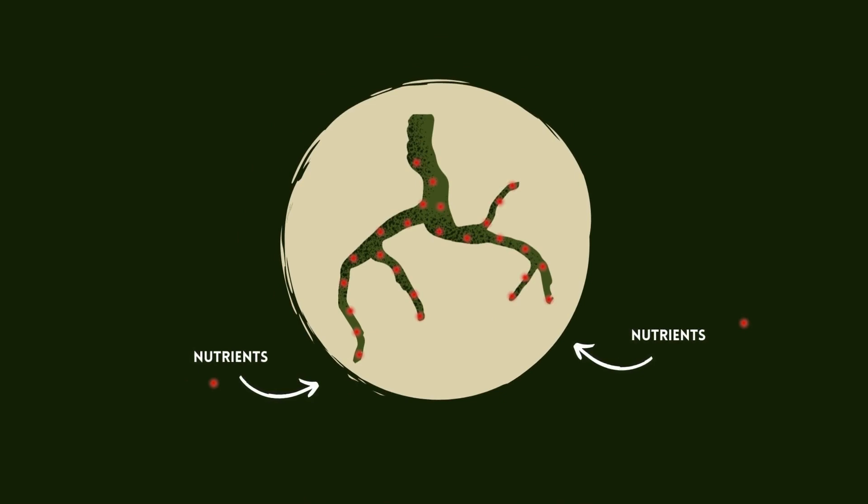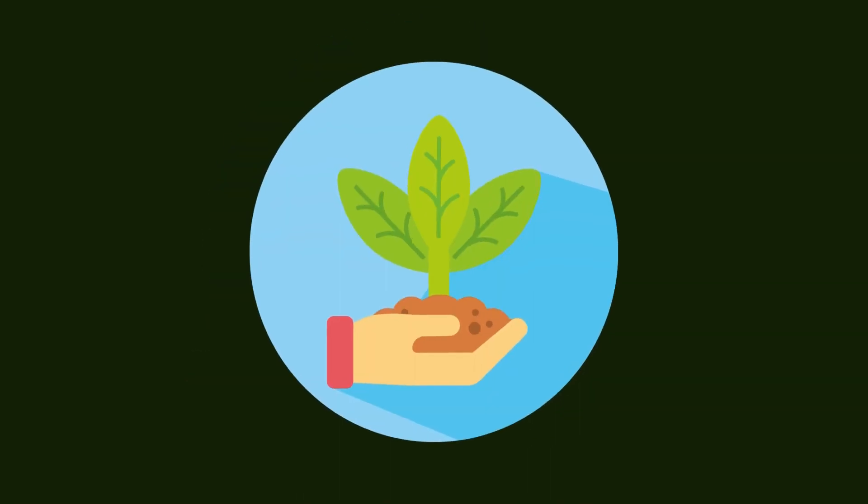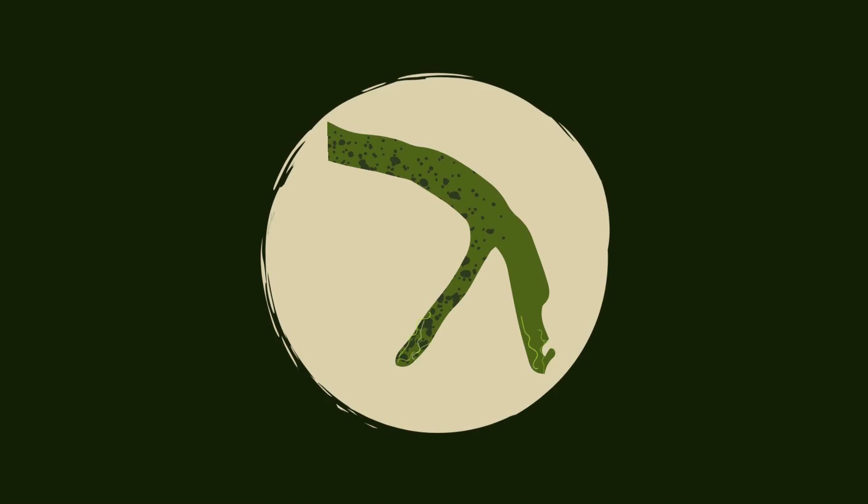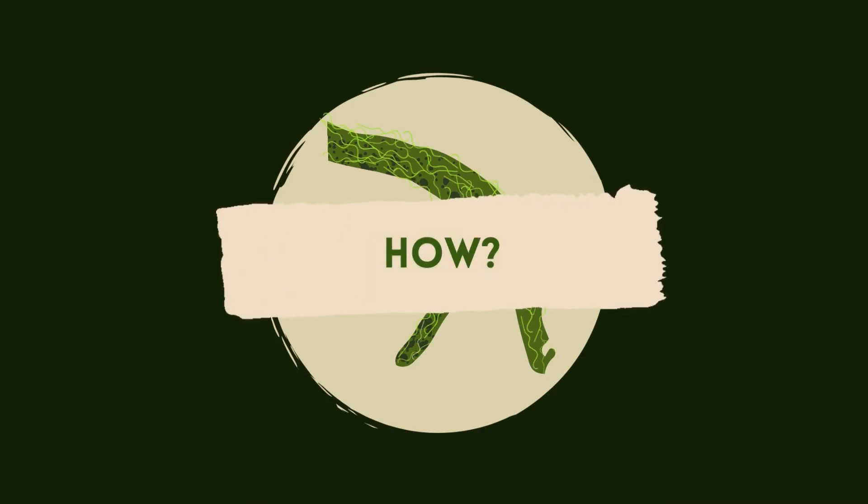This means that this fungus is very interesting for agricultural purposes. The problem is that we know very little about how it grows on plants, and this is where the fluorescence comes in.